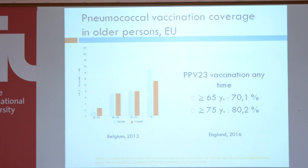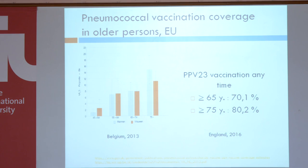Recommendations are there in several countries, and coverage of vaccination is very heterogeneous in Europe. You have countries where there is no recommendation to vaccinate with a pneumococcal vaccine, like in the Netherlands — they don't vaccinate with a pneumococcal vaccine in the adult population. Then you have countries such as mine, Belgium, where the uptake of pneumococcal vaccination in the older population is very low, only around 10%. On the other hand, you have more successful countries like the UK, where 80% of people 75 or older have been vaccinated. So there is large heterogeneity in vaccine coverage for pneumococcal disease in Europe.